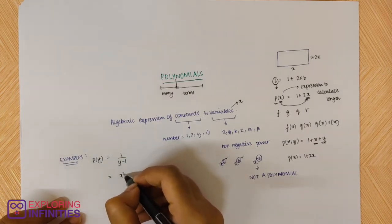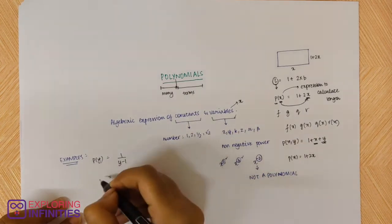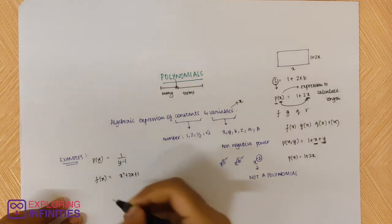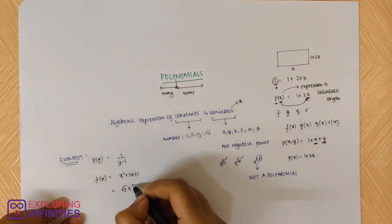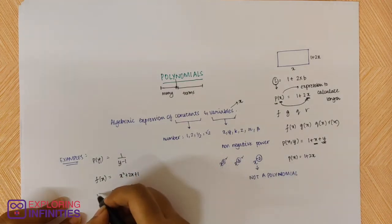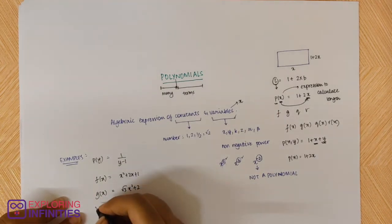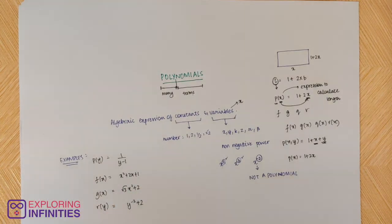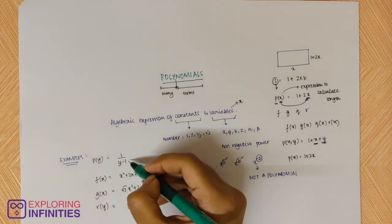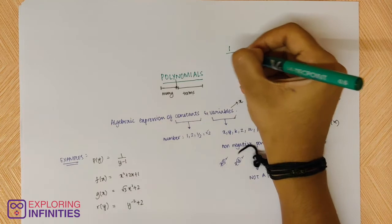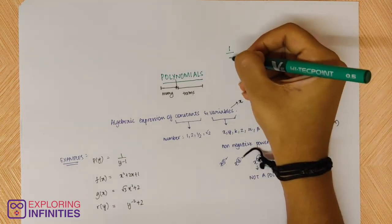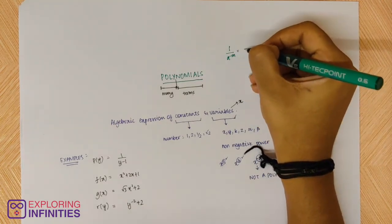And here is x² + 2x + 1, which can be f(x). Or root 3 · x² + 2, which can be g(x). Or y to the power minus 2 plus 2 — here the variable is y, so we write it as r(y). So now we have to see whether each of these is a polynomial or not. Starting with 1/(y − 1).